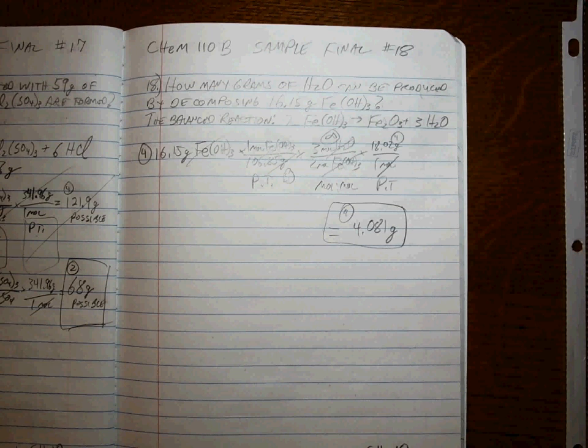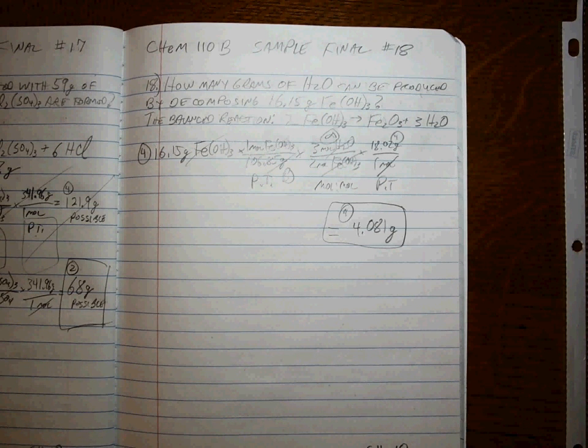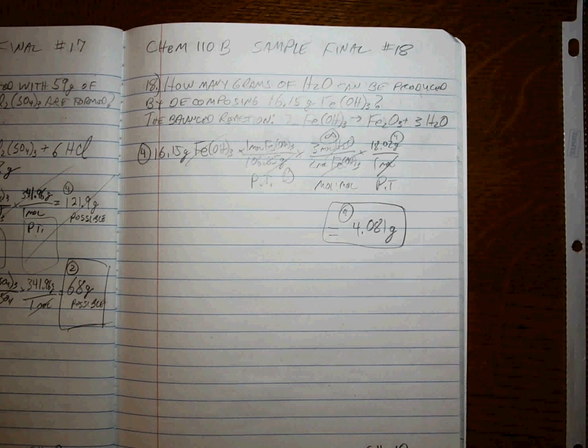Let's make sure. I've heard some rumors that number's off by a little bit. So let's say 16.15 divided by 106.85 times 3 divided by 2 times 18.02 equals.